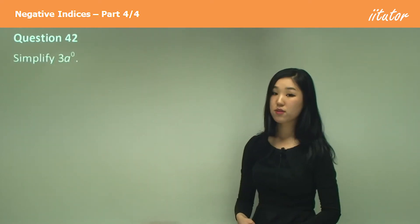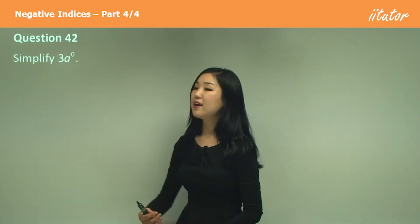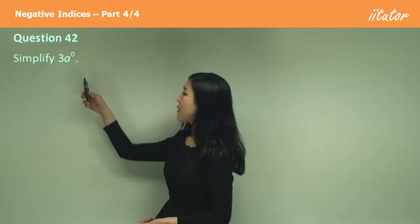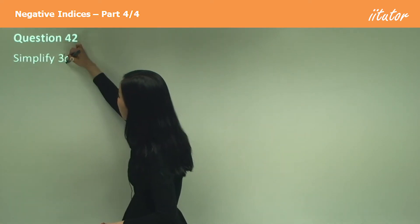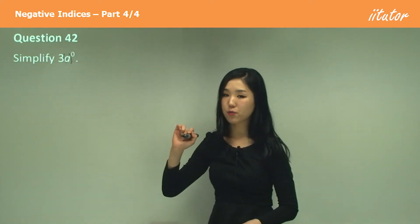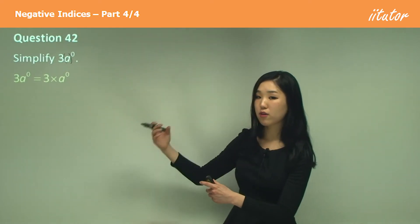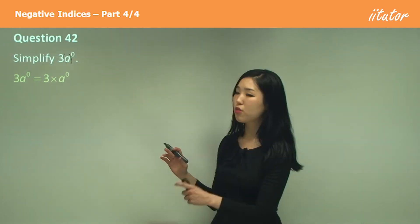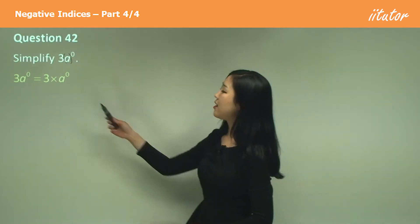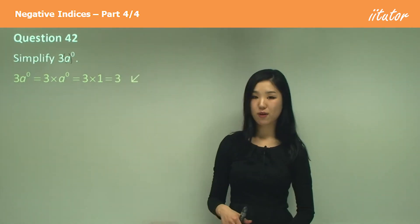Now this one is different to the previous question, because it's three a to the power of zero without brackets. When I don't have brackets, the power of zero is only for the a — we're not powering three as well. So it's three times a to the power of zero. A to the power of zero is one, so three times one is three.